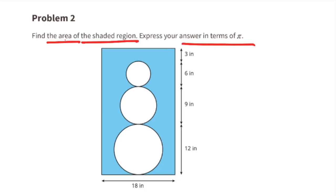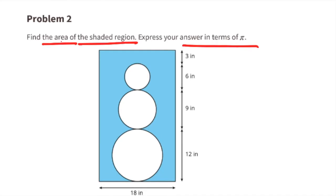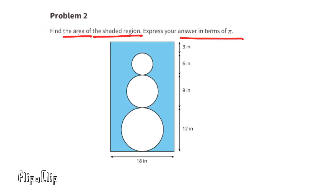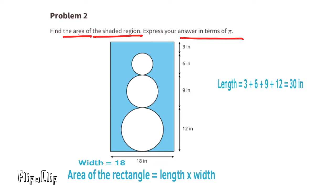Problem number two: find the area of the shaded region, express your answer in terms of pi. First, I'll find the area of the blue rectangle, then I'll find the area of the three circular shapes inside and subtract the area of those circular shapes from the area of the rectangle.